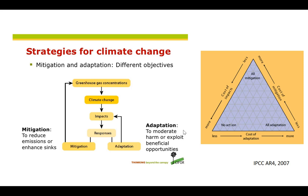Adaptation to climate change involves developing ways to protect people and places by reducing vulnerability to climate impacts. For example, to protect against sea level rise and increased flooding, communities might build seawalls or relocate buildings to higher ground.